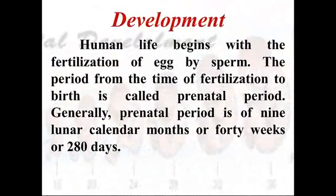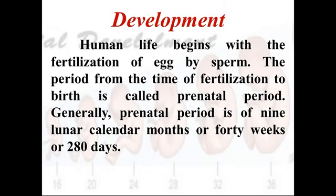Human life begins with the fertilization of an egg by sperm. You can see in my previous video on biological factors of human development how the sperm fertilizes an egg. The period from the time of fertilization to birth is called prenatal development or the prenatal period. Generally, the prenatal period is 9 lunar calendar months, or 40 weeks, or 280 days.